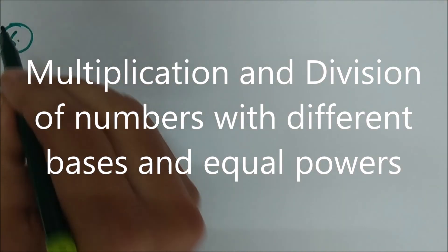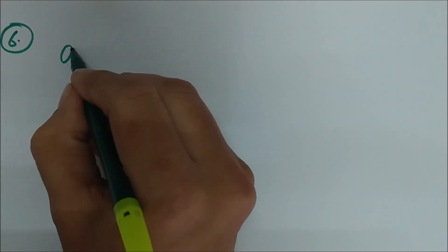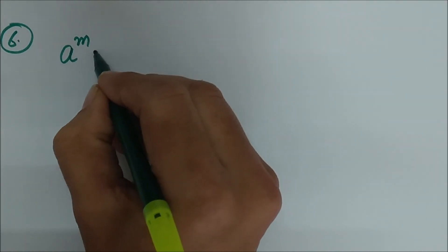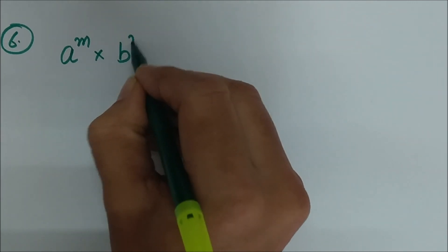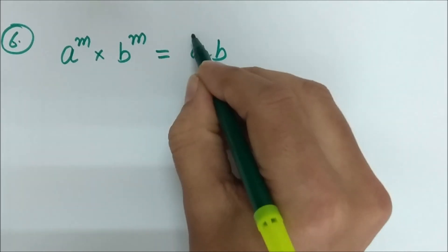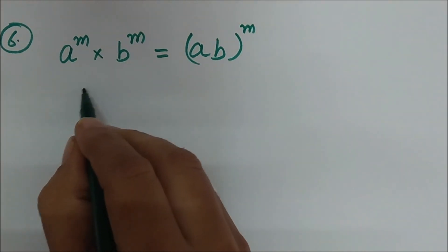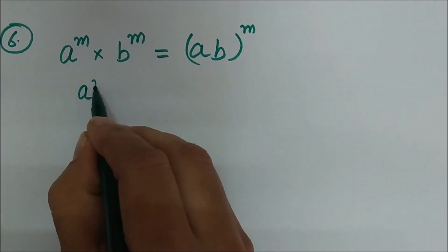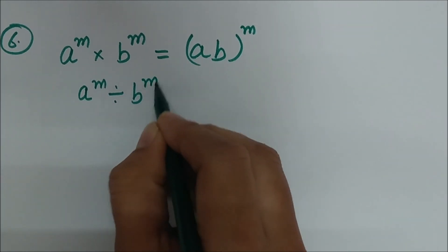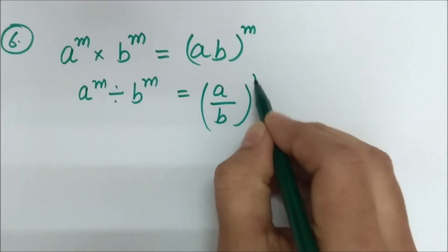When the bases are different but the indices are the same, in multiplication: a raised to the power m multiplied by b raised to the power m simply becomes ab raised to the power m. Similarly, in division with different bases but same indices: a raised to the power m divided by b raised to the power m simply becomes (a divided by b) raised to the power m.